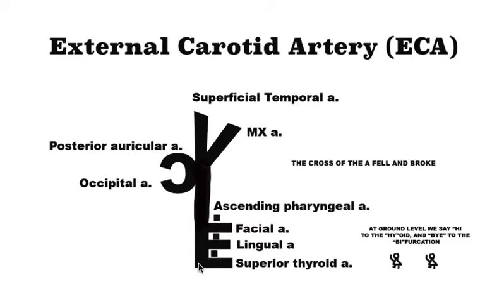It's also important to remember that the external carotid artery is branching as a part of the common carotid artery, with the other major artery being the internal carotid artery. The level of bifurcation is important, and that level happens just about at ground level. If you look at this and pretend it's a structure, here are two people on ground level. So the bifurcation is happening at ground level — at ground level we say 'hi' to the hyoid and 'bi' to the bifurcation.